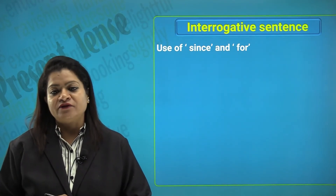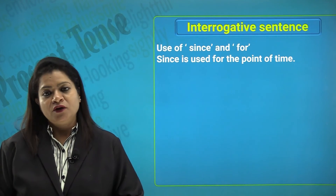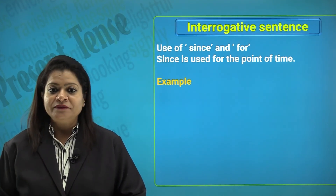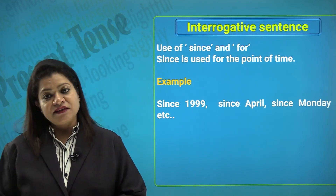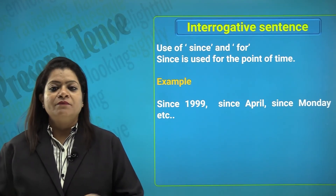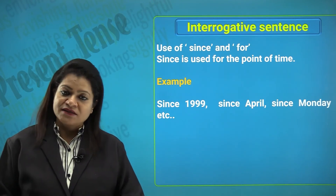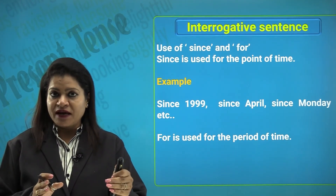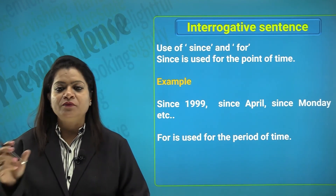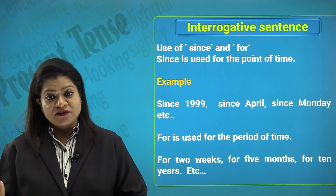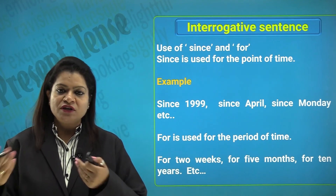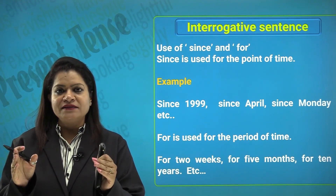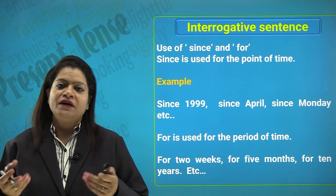'Since' is used for a point of time, meaning something began at some point and may still be going on — for example: since 1999, since April, since Monday, since last two days. You do not know whether it is over or still going on. 'For' is used for a period of time — something began and has finished within a limited or definite period: for 2 hours, 2 days, 2 weeks, 5 months, 10 years. So use 'since' for ongoing continuous actions and 'for' for actions contained within a defined time period.